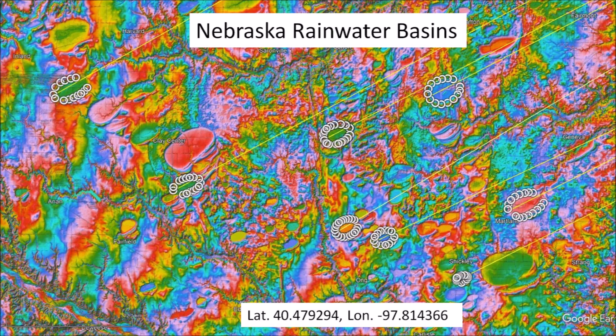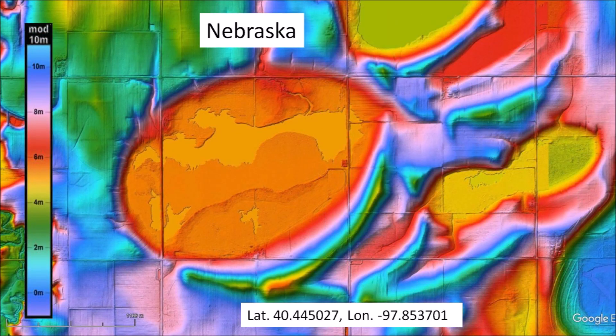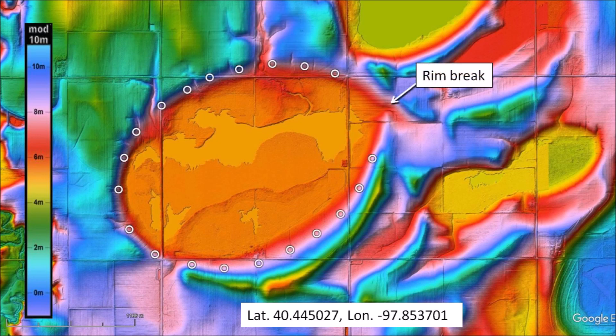I selected several basins, fitted them with ellipses by the least squares method, and determined their orientation. This image shows lines illustrating the extension of the major axis. Some basins are well preserved and they can be fitted with ellipses fairly easily. This basin has precise borders and we can select points along the perimeter of the basin at the transition from red to pink in the colorized topography.